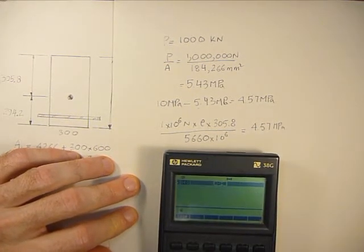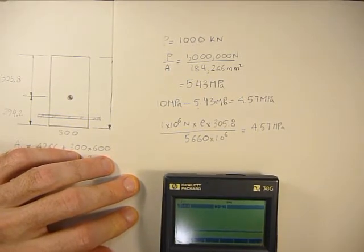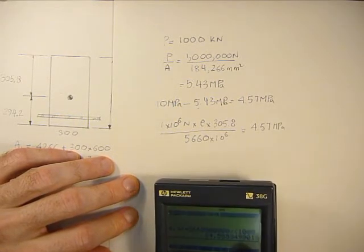So 4.57 times 5660 times 10 to the sixth, divided by 1 times 10 to the sixth, times 305.8. And E is 84.58 millimeters.